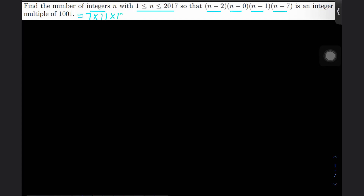Hello friends, welcome to Mathematics Scolio. Today we will discuss an application of the Chinese Remainder Theorem. The question is: find the number of integers n from 1 to 2017 such that the product λ = (n−2)·n·(n−1)·(n−7) is an integer multiple of 1001.